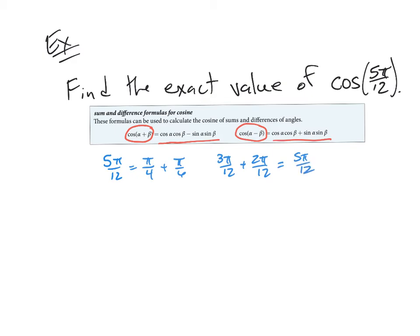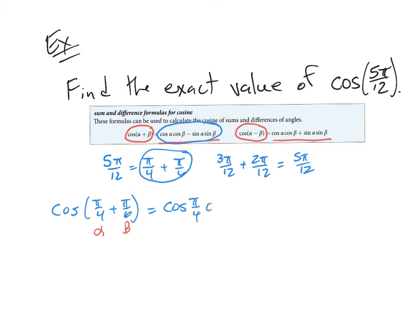So rather than find cosine of 5 pi over 12 directly, I'll find the cosine of this sum. Cosine of 5 pi over 12 — written as pi over 4 plus pi over 6 — equals cosine of pi over 4 times cosine of pi over 6, minus sine of pi over 4 times sine of pi over 6. Remember: if it's a plus in the parentheses, it's a minus in the cosine formula. Here alpha is pi over 4 and beta is pi over 6.